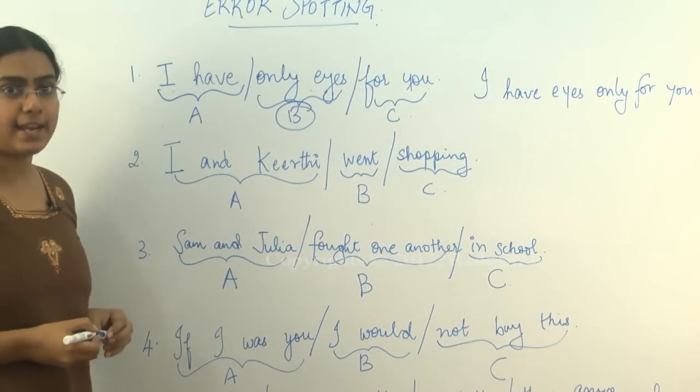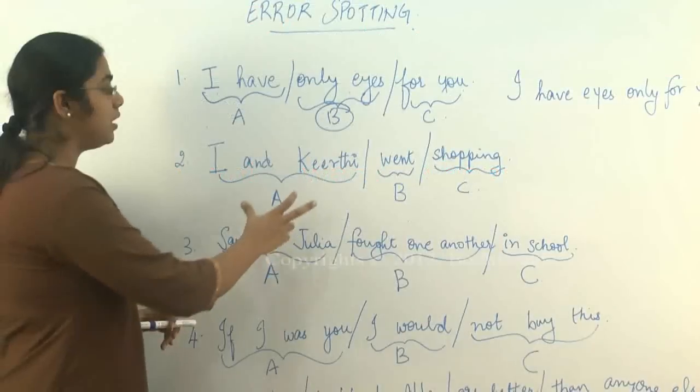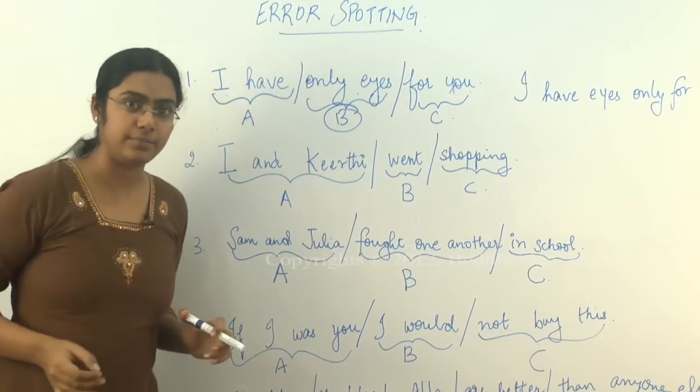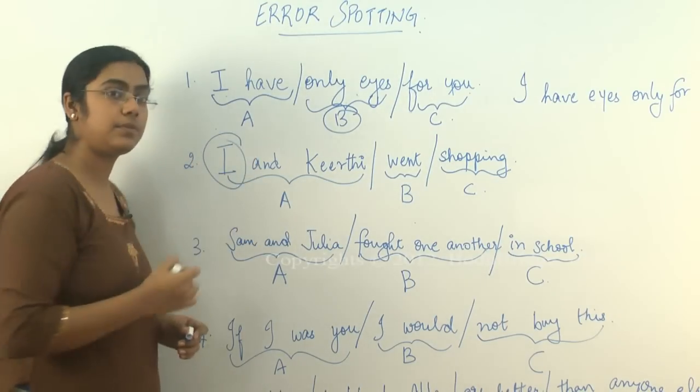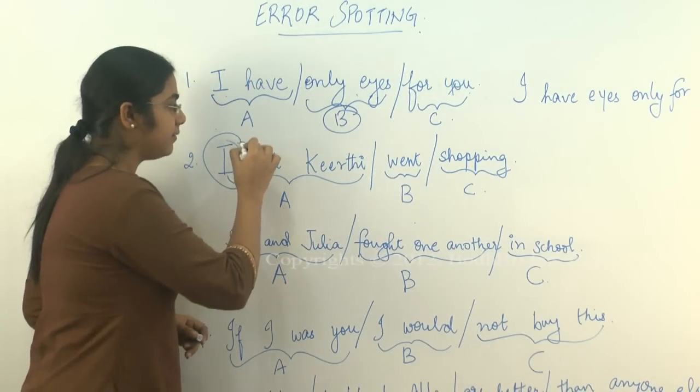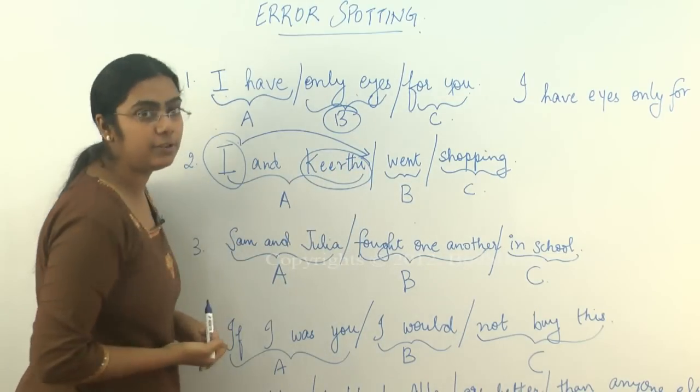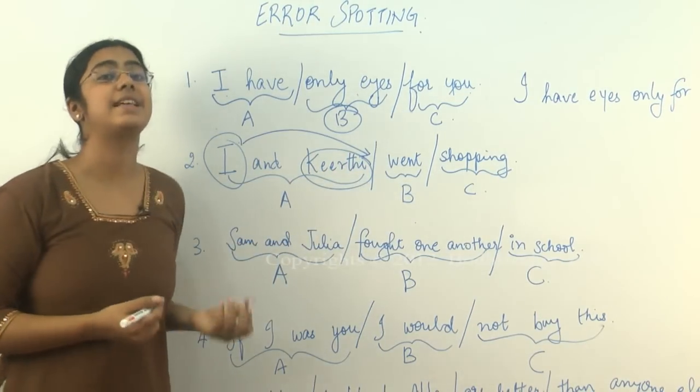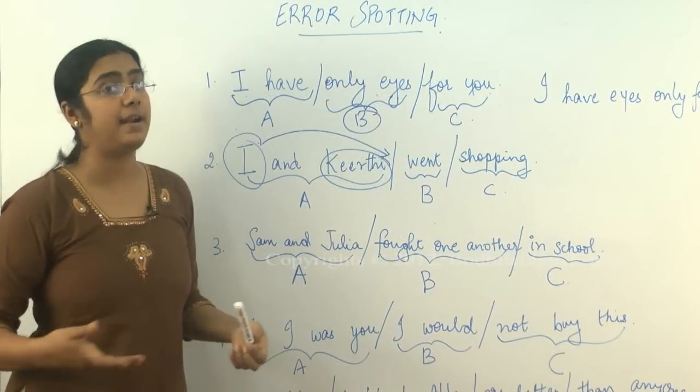Now look into the second question. I and Kirti went shopping. Do you think there is an error here? Now, I and Kirti. Remember, whenever you have I, when you denote yourself, the I here must always follow Kirti or whatever it is. Sam and I, the kids and I, the team and I. The team and I played the match. It is never I and Kirti went shopping.